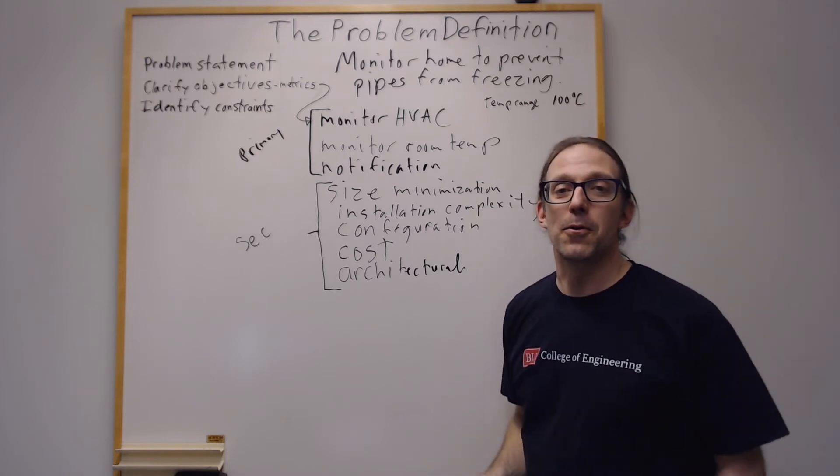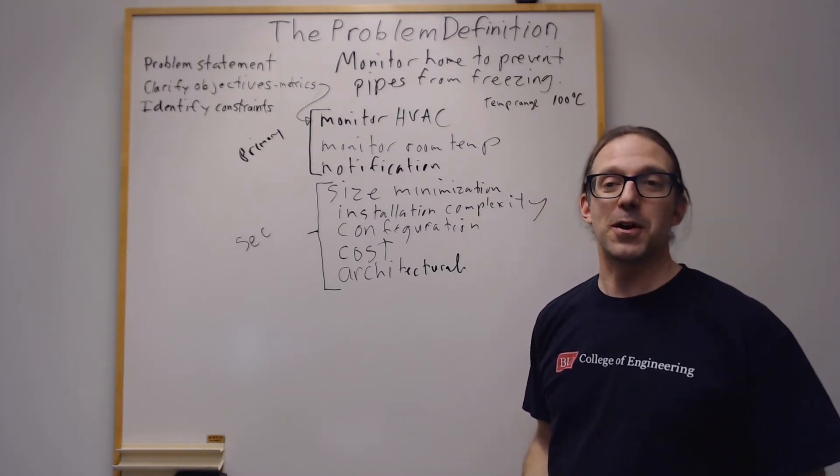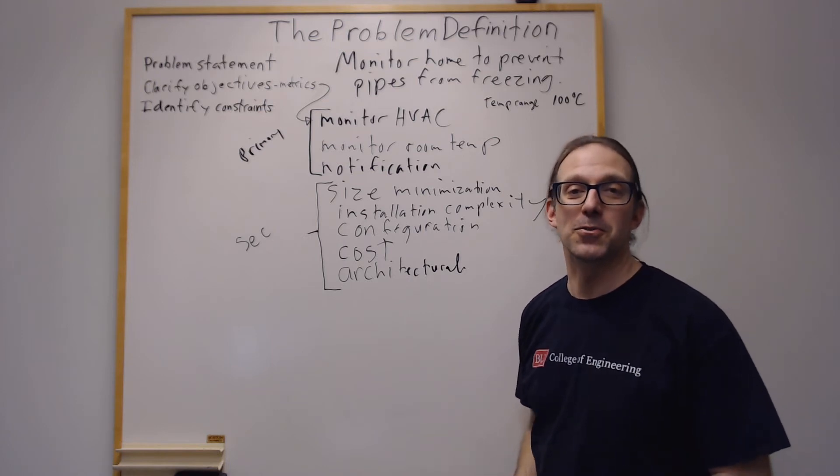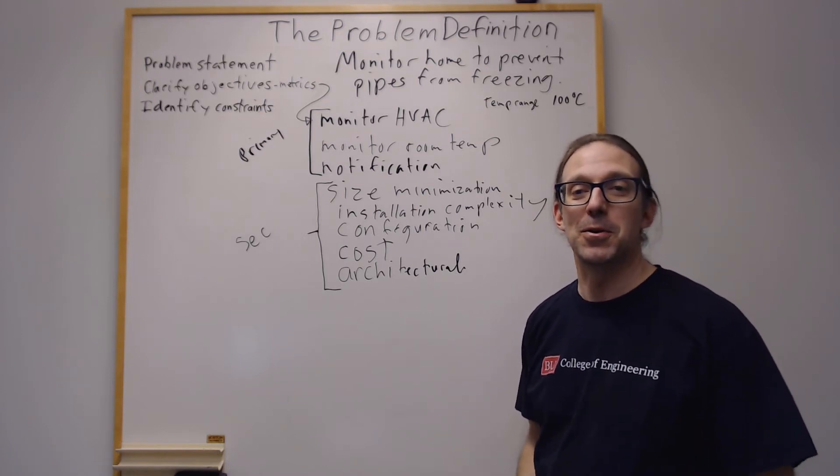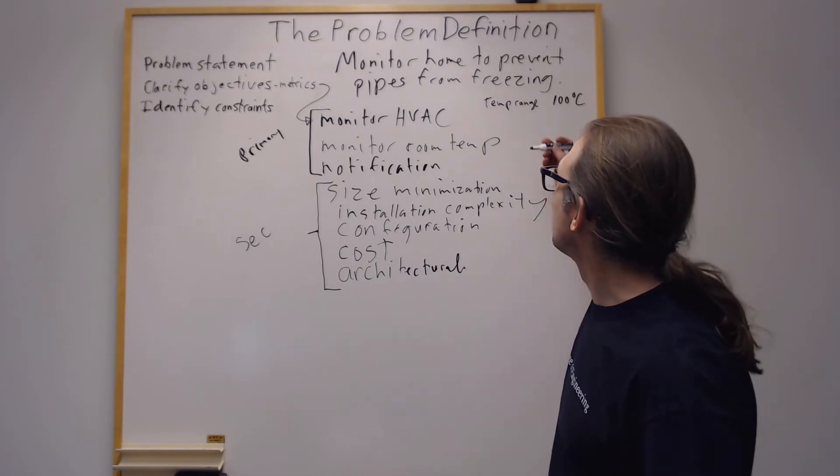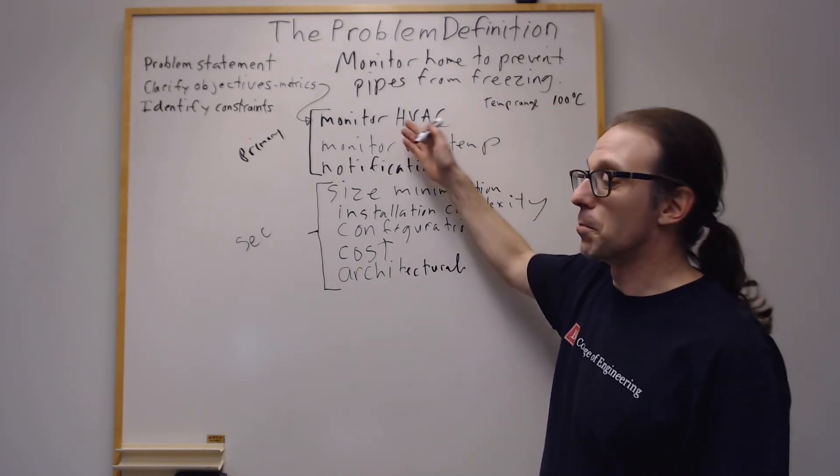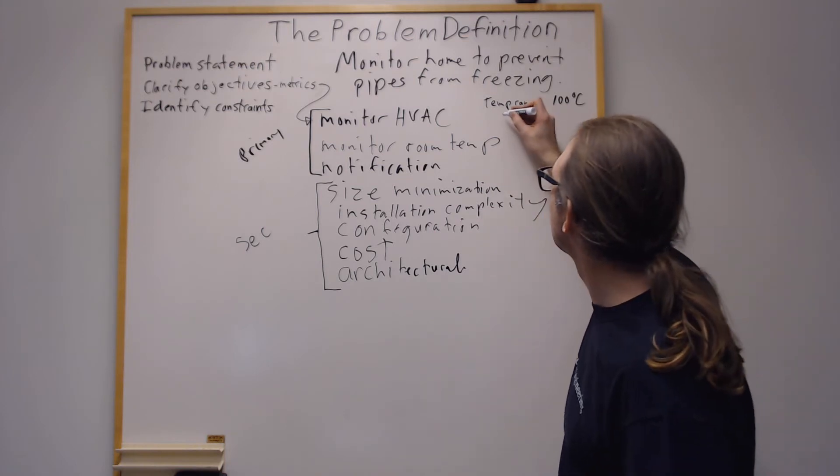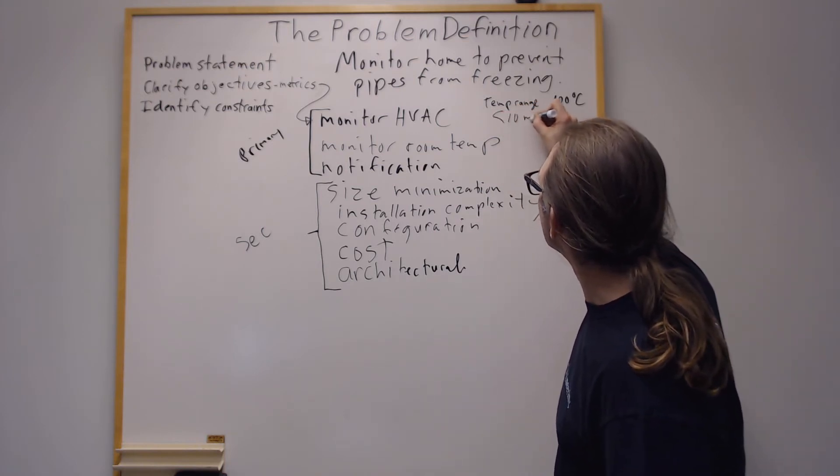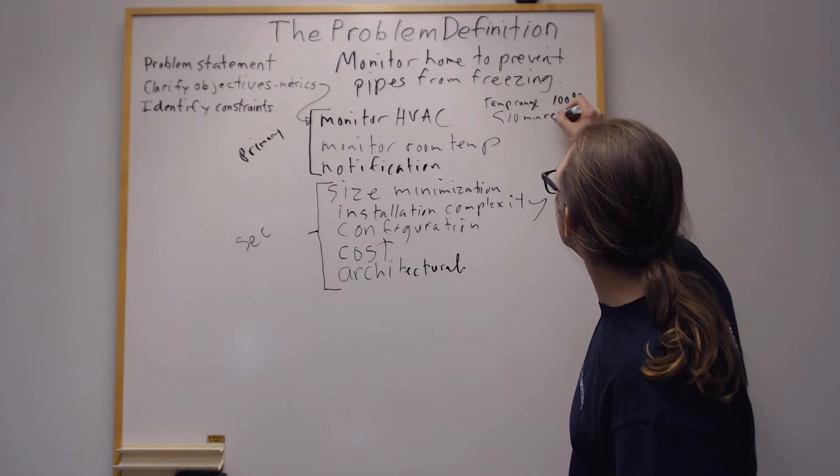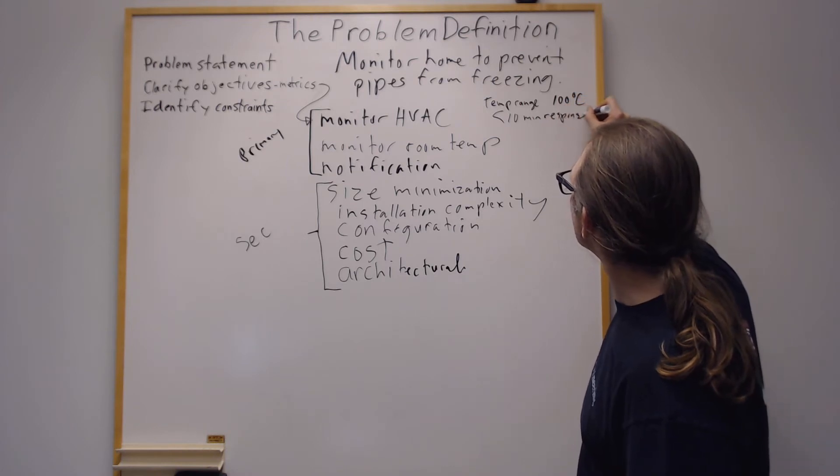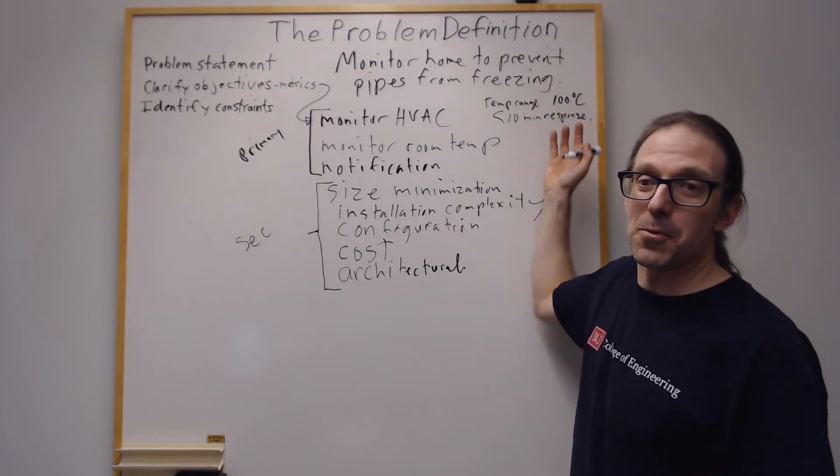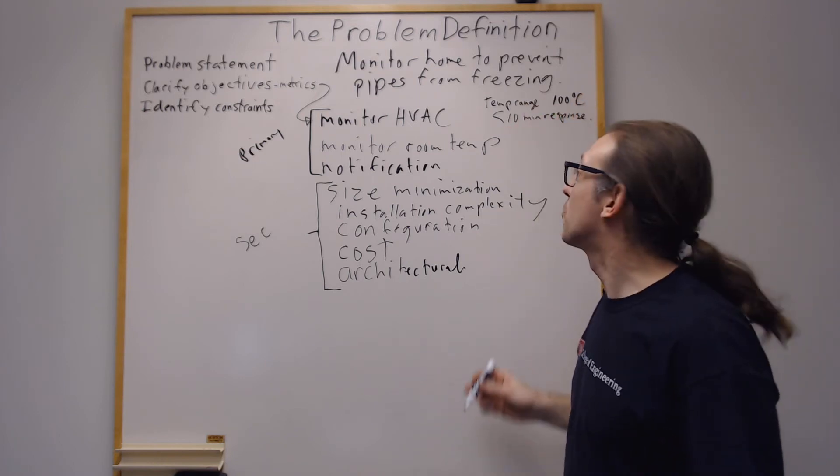And then another thing that might be important is how long it takes to monitor this. Like how fast does it respond? Does it take an hour to measure the temperature? That might be too long. But maybe 10 minutes isn't too bad. In other words, if this breaks and it's cooling off, if we know 10 minutes after it breaks, less than 10 minutes response, which is actually kind of generous. So these are two metrics. There are numbers there. Those are things that we're going to try to shoot for.